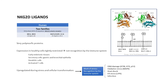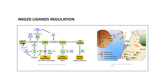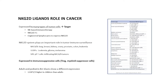This makes NKG2D ligands very important for immune surveillance and tumor recognition. We also know that the regulation of these ligands is quite complex, as they undergo many transcriptional regulations with many factors that can influence cell surface expression. Adding further complexity, under some conditions these ligands can be shed and released as soluble ligands, which can block the immune response by interfering with the immune synapse of effector cells. This makes them a potential target not only for NKG2D-bearing cells, but also for antibodies and engineered lymphocytes expressing the NKG2D receptor.